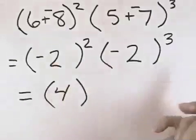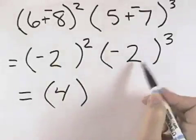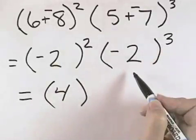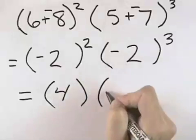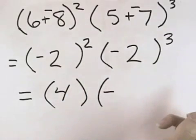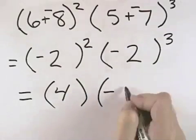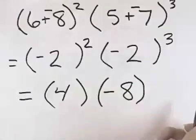If we have a negative 2 to the third power, that means negative 2 times negative 2 times negative 2. That's three negatives. An odd number of negatives is negative, and 2 times 2 times 2 is 8, so we're left with negative 8.